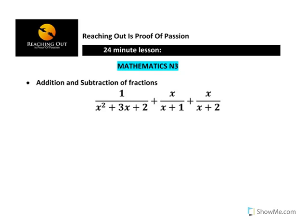Let us look at a typical exam question where you have to simplify a fraction. For example, suppose you are given the following: 1 over x squared plus 3x plus 2, plus x over x plus 1, plus x over x plus 2. The first denominator is x squared plus 3x plus 2, the second is x plus 1, and the third is x plus 2.